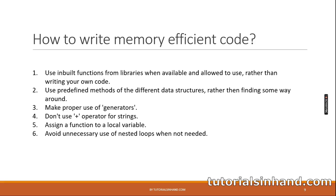Third, make proper use of generators. If you don't need an iterable upfront, always use generators — they are both time efficient and memory efficient. Fourth, don't use the plus operator for string concatenation; use the available string methods instead. Fifth, assign a function to a local variable when appropriate. Sixth, avoid unnecessary use of nested loops. The more nested the loops are, the more time the code takes to run. Always aim for one or maximum two loops — increased nesting makes the program slower and less memory efficient.